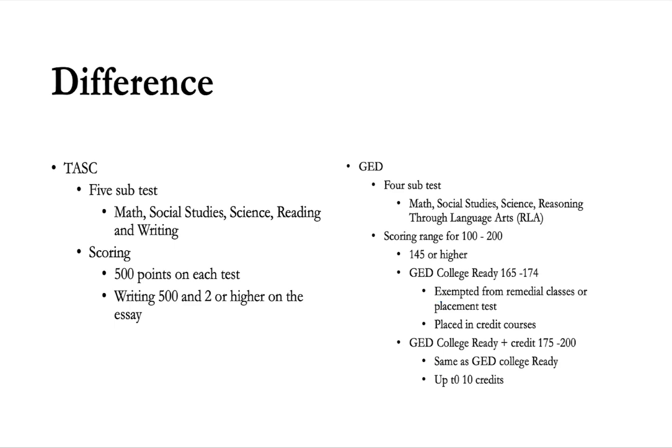I want to talk about the differences between the TASC test and the GED test. The TASC test had five subtests: math, social studies, science, reading, and writing. In order to pass a subtest you had to get 500 points on each test, and on the writing test you had to get 500 points plus a 2 or higher on the essay section. Two readers would read your essay and grade it.